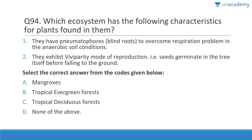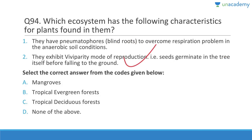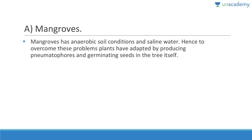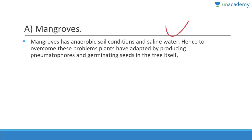Question 94: The ecosystem with pneumatophores (blind roots to overcome respiration problems in anaerobic soil), and viviparous reproduction where seeds germinate on the tree before falling — is mangroves. Mangroves have anaerobic soil conditions and saline water, so plants have adapted by producing pneumatophores and germinating seeds on the tree itself.